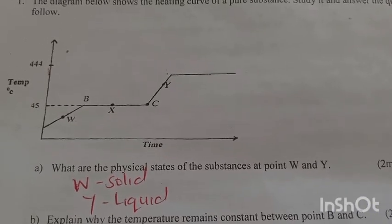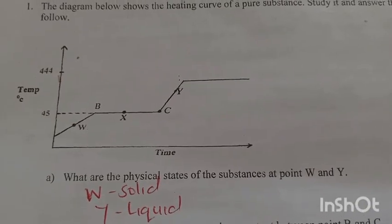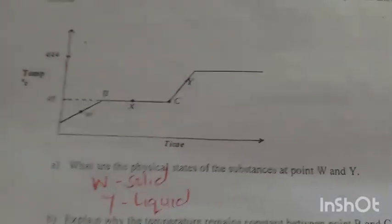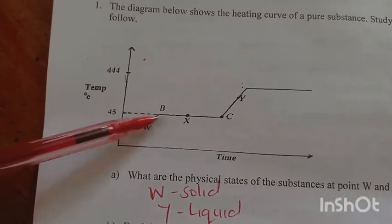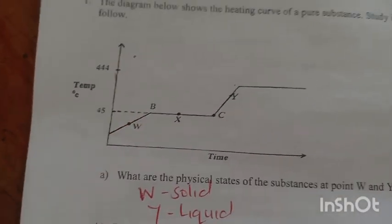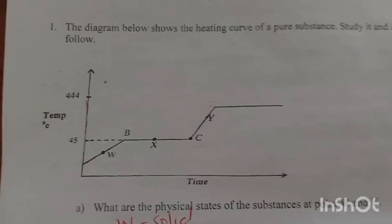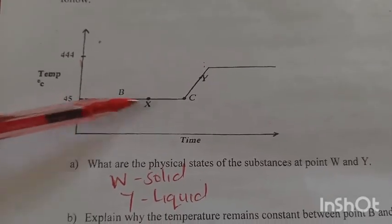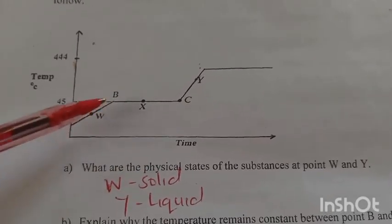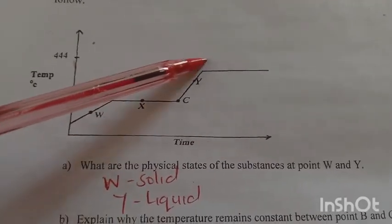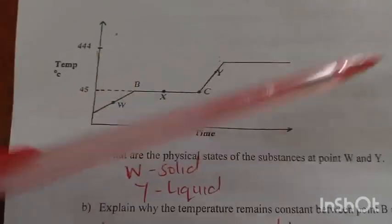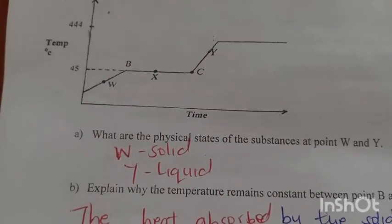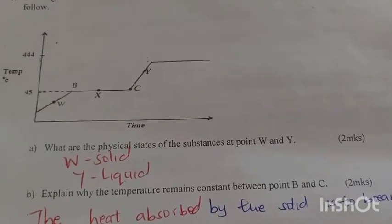What are the physical states of substances at point W and Y? At point W, the substance is a solid. At point Y, the substance is liquid because this is solid, then solid melting, change of state from solid to liquid, and then liquid gains heat. At point Y it's a liquid.